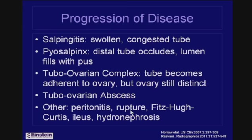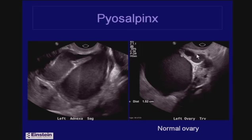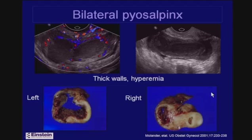Other complications include peritonitis, rupture of a TOA, ileus, and hydronephrosis. A pus-filled dilated tube shows a large portion curving back on itself with an incomplete waist sign, low-level echoes, and a fluid-debris level. While a portion may look like a mass, the endosalpingeal folds are highly characteristic of the fallopian tube, and the ovary is separate.